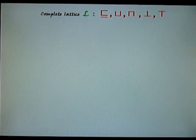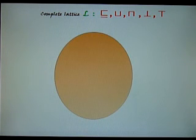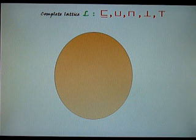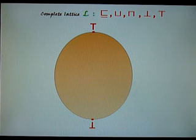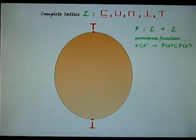Picture a complete lattice. A complete lattice is basically a set with some approximation ordering, some accumulation binary operation called join, and some elimination operation called meet, a least element called bottom, and a most or highest element called top. You can picture it as an egg, where the lower elements are at the bottom and the upper elements are at the top. You can then consider a function of L onto itself that respects the ordering — this property is called monotonicity. A monotonic function is any function from L into itself that preserves the ordering: x approximates x prime, therefore f of x must approximate f of x prime.